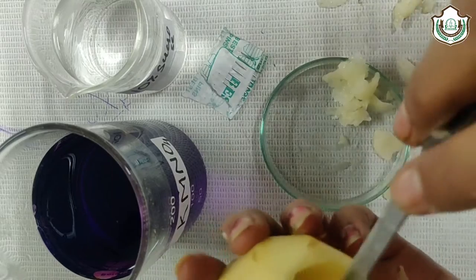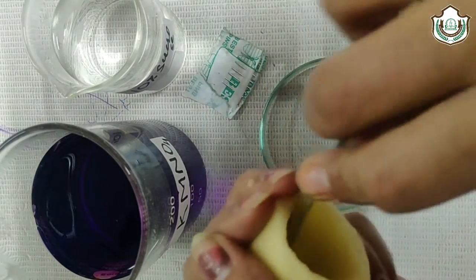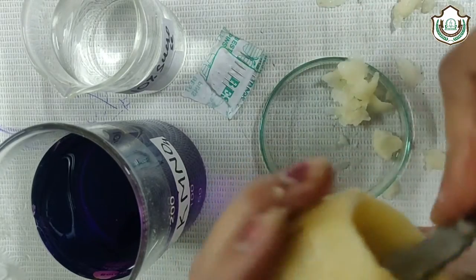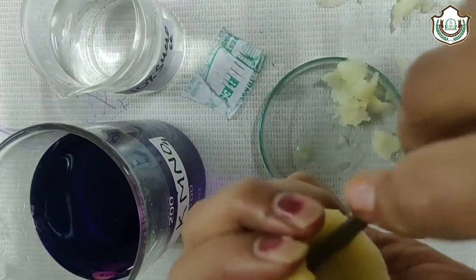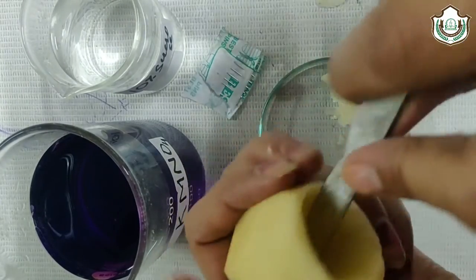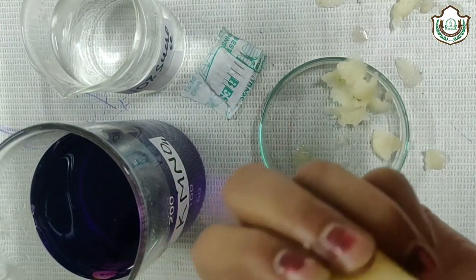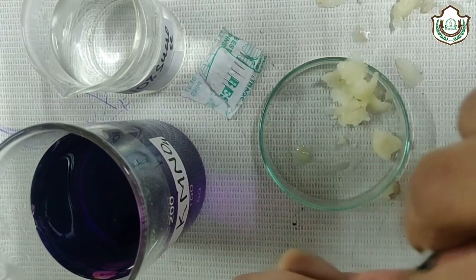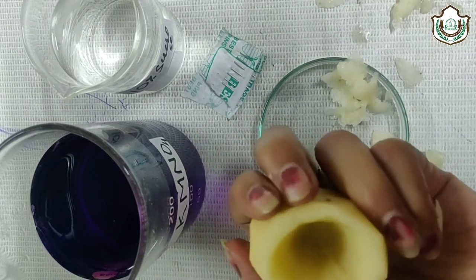Like this. Then the liquid, the sucrose which you pour in the cavity, fill in the cavity, will be leaked out and the procedure, our experiment could not be done. So make smoothly thin layer of potato.